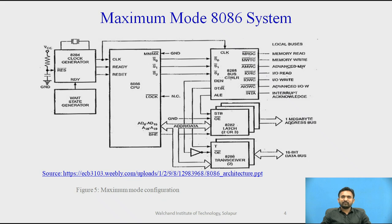The bus controller chip uses the information made available by the processor on the status lines. The bus controller chip has input lines S2, S1, S0, and clock, driven by the CPU. It derives outputs: ALE, DEN, DT/R, memory write, I/O read, I/O write, and memory read.